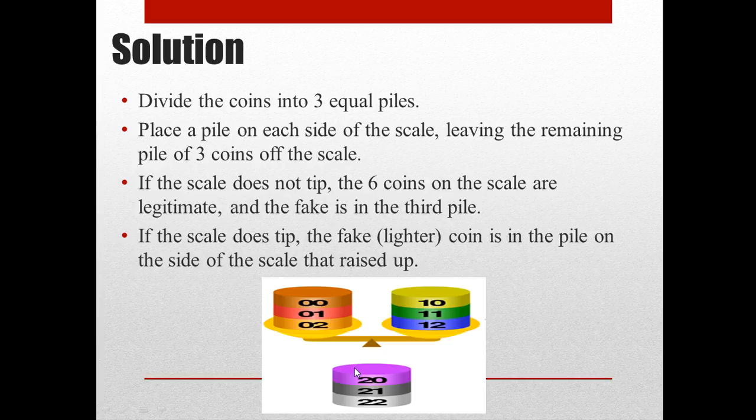And the fake coin lies in this third pile. If the weights on the scale are unbalanced, then we can easily identify the lighter weight pile, suppose this pile. So, we can infer that the fake coin lies in this pile.